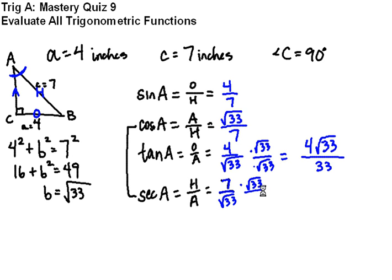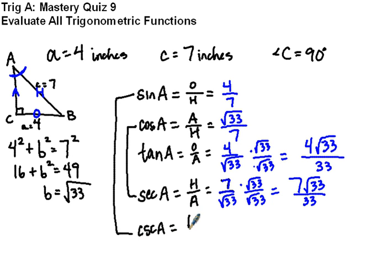And cosecant, which is the reciprocal of sine, so that means it's hypotenuse over adjacent, and we have hypotenuse being 7 over opposite is 4. No square root in the bottom, we don't need to do anything about that.